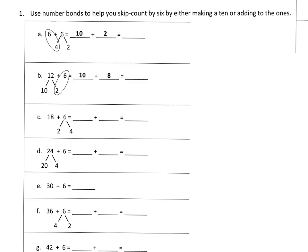We'll use number bonds to make multiples of ten. For example, six plus six: six plus what gives us ten? Six plus four gives us ten, plus we have two left over, so ten plus two is twelve. Most third graders would know that six plus six is twelve, but we're really focusing on using number bonds to help some students do their skip counting and repeated addition a little bit quicker.